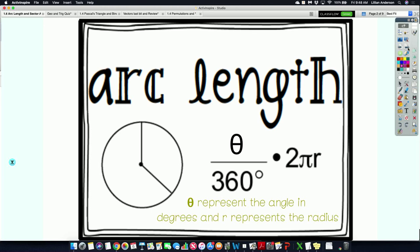Starting with arc length, the formula is theta over 360 times 2 pi r, where theta represents the angle in degrees and r represents the radius. Arc length is basically that respective fraction of the circumference.